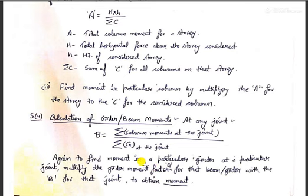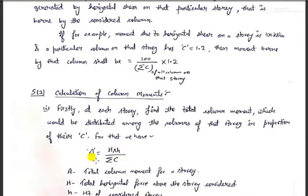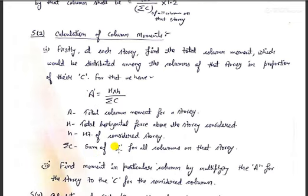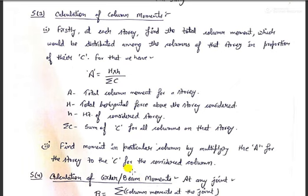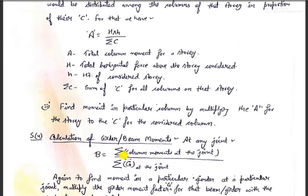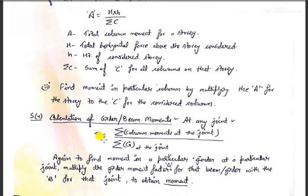Once we have calculated C and G, we calculate A and multiply it by C for a particular column to get that column's moment. To determine the moment for a girder or beam, we calculate B for a particular joint and multiply by the girder moment factor G for that beam. Although no problem has been solved here as the examples are lengthy, understanding this procedure allows you to analyze any portal frame using the factor method.